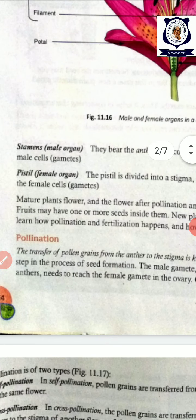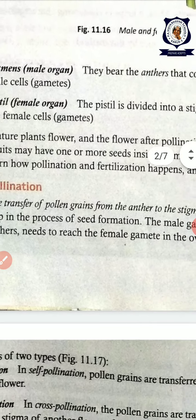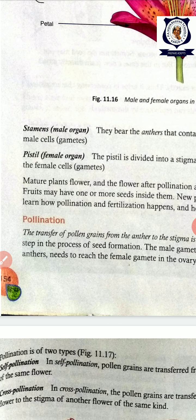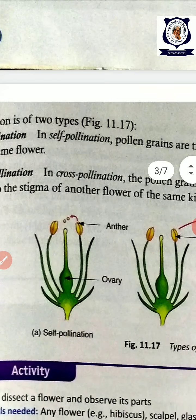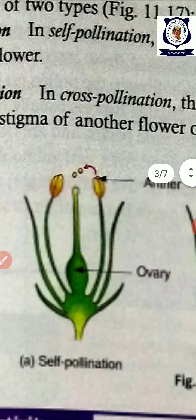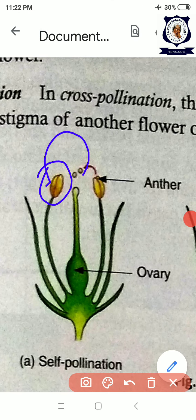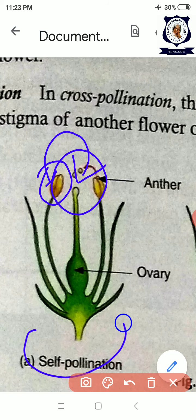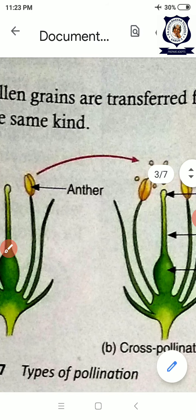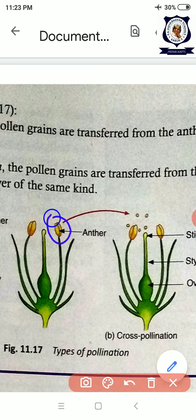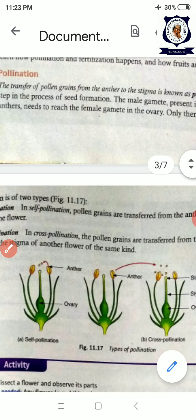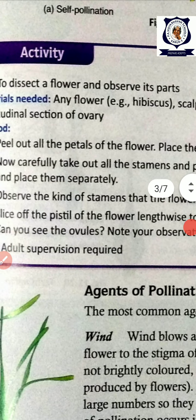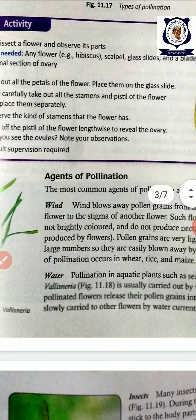Now let us go to pollination. Pollination must be accompanied by fertilization — then only fruits are formed, seeds are formed, and reproduction is completed. What is pollination? The transfer of pollen grains from the anther to the stigma of a flower is called pollination. If pollen grains fall on the same flower's stigma it is called self-pollination. If pollen grains fall from one flower to another flower's stigma, that is called cross-pollination. So the two types of pollination are self-pollination and cross-pollination.